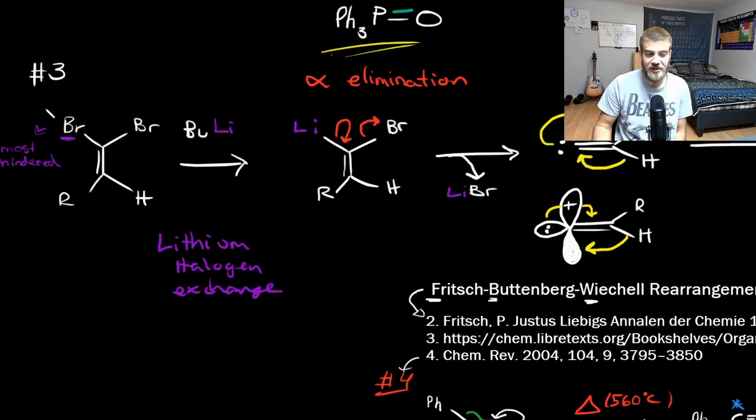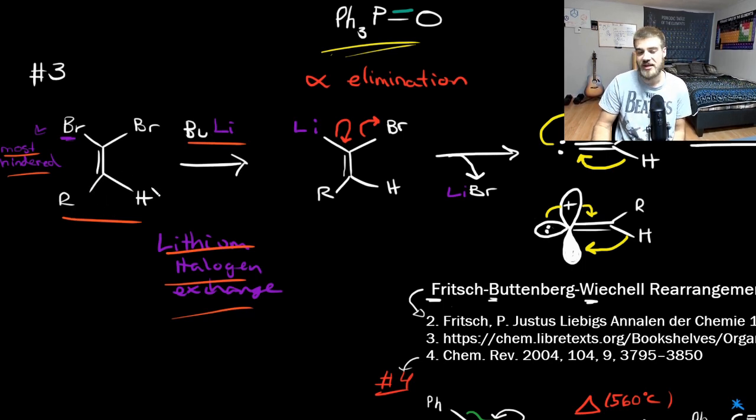For the third and final part of this reaction mechanism, you get to have a lithium halogen exchange. This happens when your dibromo alkene reacts with butyl lithium to exchange one of its bromine atom for a lithium. And this happens, by the way, on the most hindered bromine atom, the one on the organic substituent side, and you get this molecule.